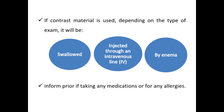By injection, contrast agents can be injected through a vein in the arm to help the gallbladder, urinary tract, liver, or blood vessels stand out on the images. The patient may experience a feeling of warmth during the injection or a metallic taste in the mouth. By enema, contrast material may also be inserted into the rectum to help visualize the intestines, which can make the patient feel bloated and uncomfortable.